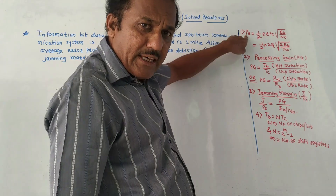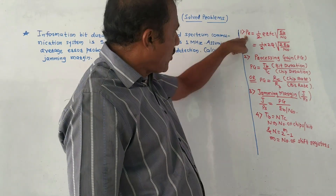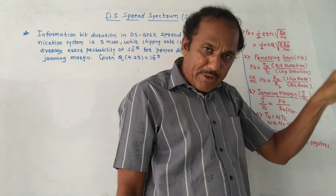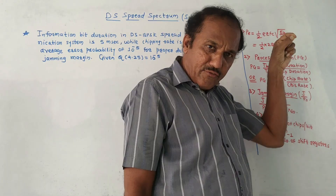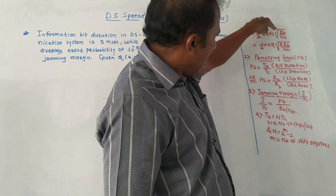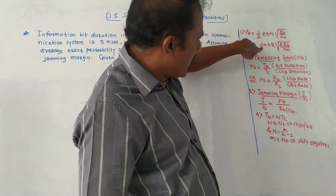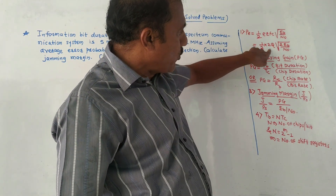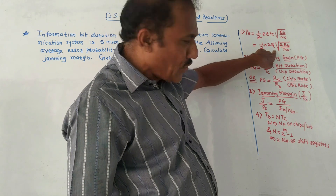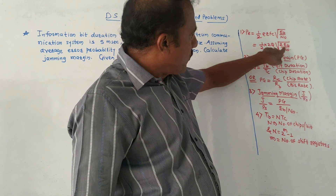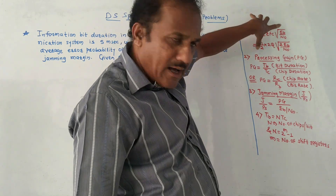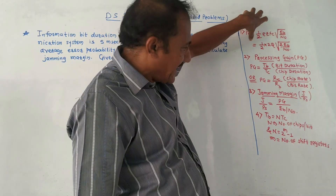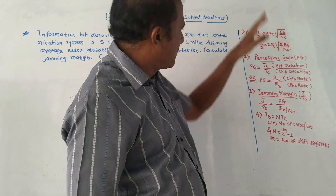First is PE, that is probability of error. It is one-half ERFC, that is complementary error function, of square root of EB by N0, which is the same as one-half into 2 Q of square root of 2 EB upon N0. We will discuss how to make use of this formula.